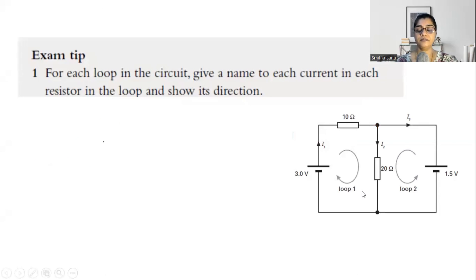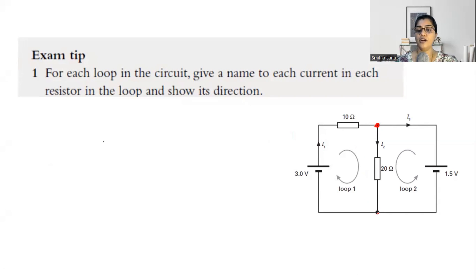Step one: if this is the circuit that is given to you, you can see that this circuit has a junction. A junction is where the current splits. You can see here it has junction one and junction two. So identify the junctions and identify the loops. There is one loop which starts from a battery and ends to the same battery, and there is a second loop here. So identify the junctions and loops.